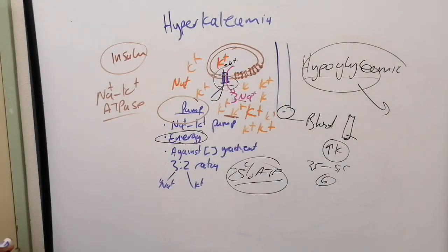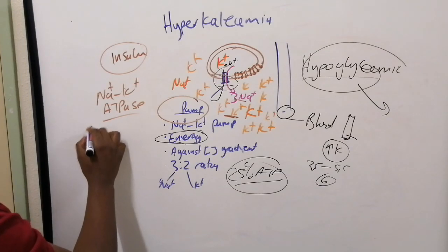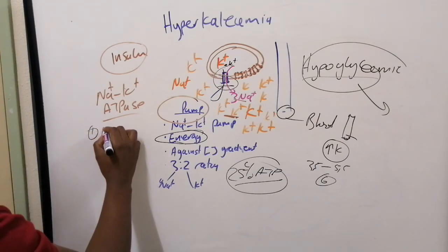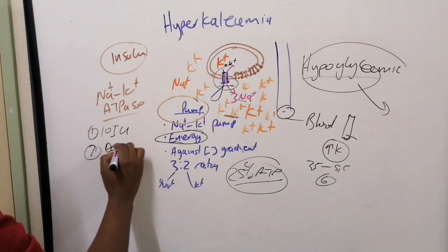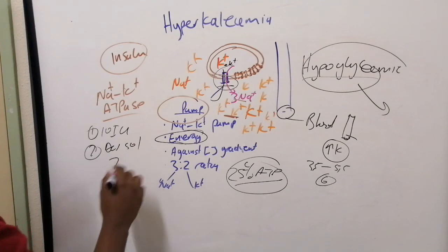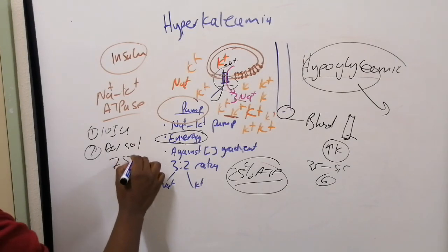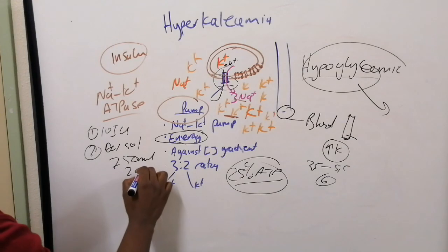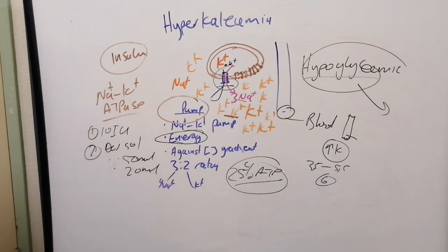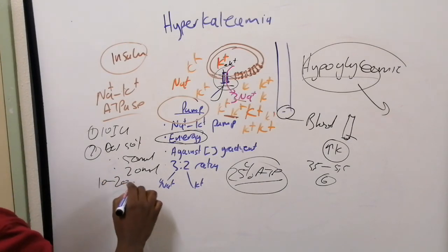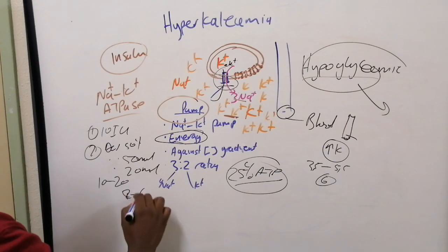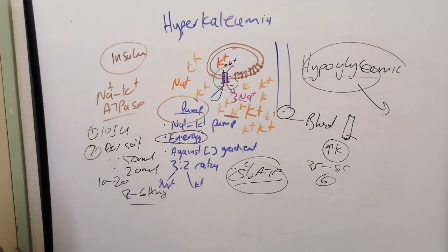There are many protocols out there, but most use insulin 10 international units and dextrose 50% — some say 50 mils, some say 20 mils, depending on the protocol you are following. This takes about 10 to 20 minutes to work and lasts for about 2 to 6 hours. I hope you enjoyed that — thanks guys!